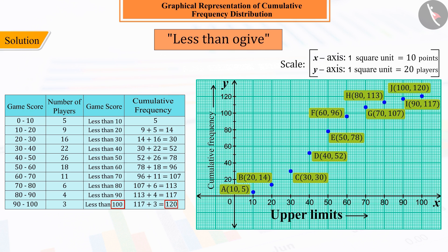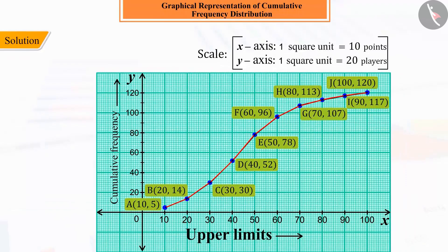And join all these points carefully. This curve obtained is called cumulative frequency curve of less than type or ogive.